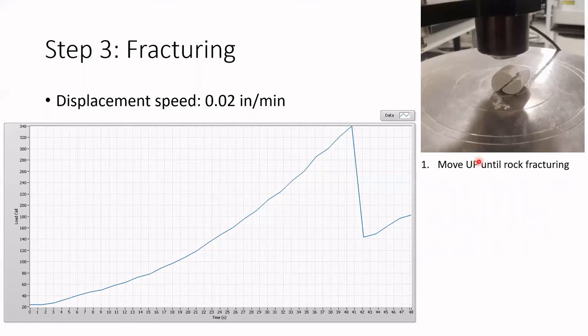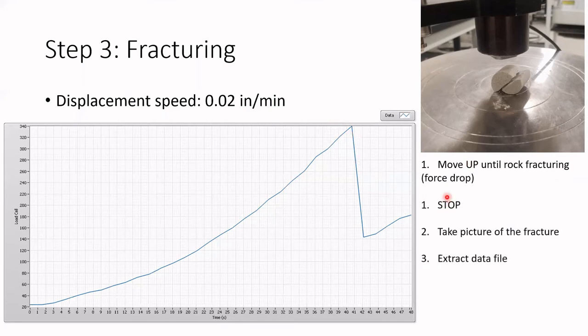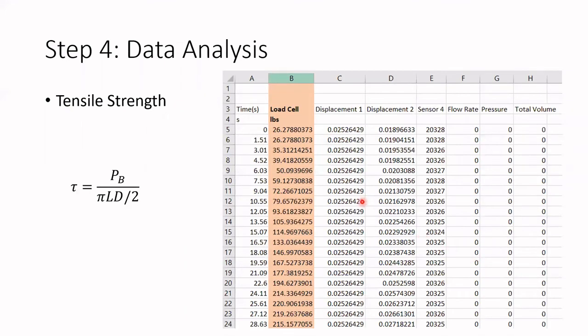As I mentioned before, we have to move up and we expect to see a force drop. Then we immediately stop the analysis, take a picture of the fracture, and extract the data file for our report. Finally, we can proceed with our data analysis. To calculate the tensile strength, we already have the length and the diameter of the sample, so we have to find which was the highest load that we applied in our load cell. From this value we can calculate the tensile strength.